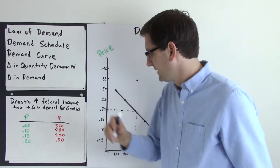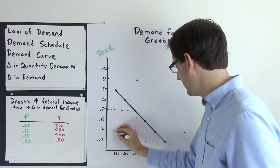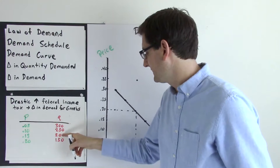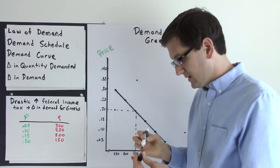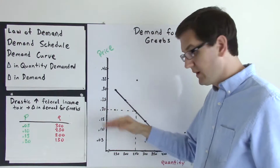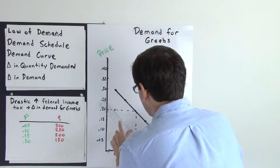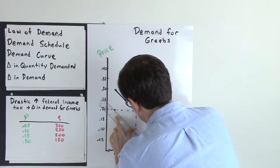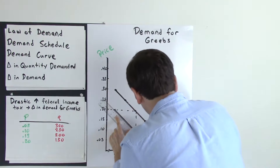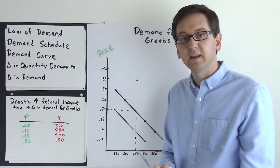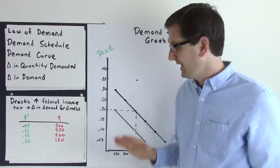Let's plot this out. At 5 cents, the quantity demanded is 300 million. At 10 cents, it's 250 million. At 15 cents, 200 million. We can see that this has created an entirely new demand curve, and we can connect the dots using a ruler to create a new curve showing demand given this scenario of an increased federal income tax. We see that the curve has shifted inward, or to the left — this shows a change in demand.